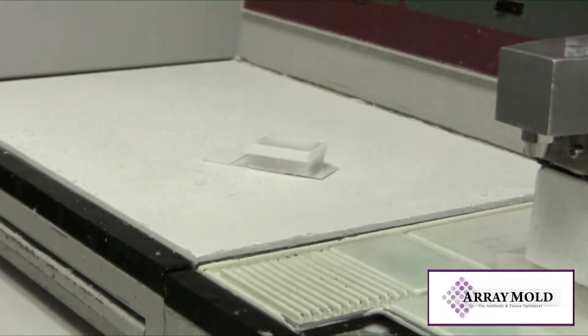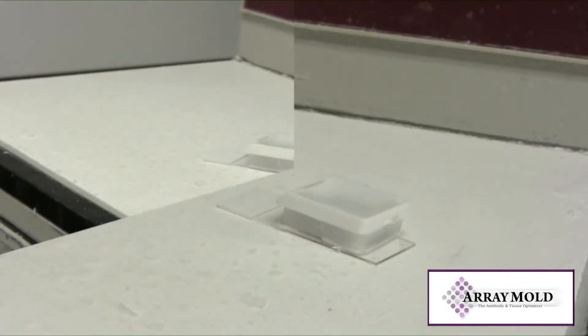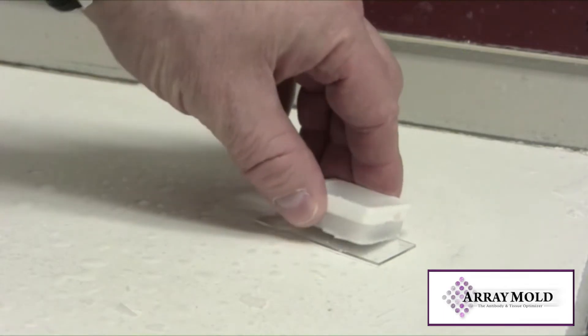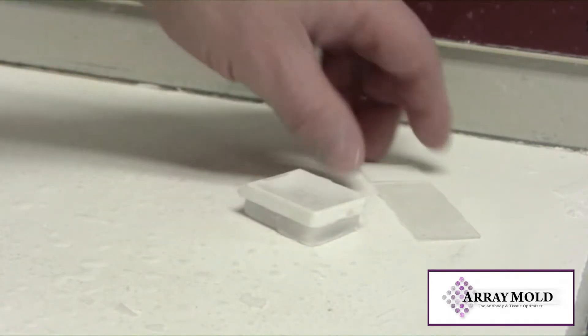Once at room temperature, place them together on a cold plate or ice tray for at least 15 more minutes to cool. Now the slides should come away easy from the paraffin block.